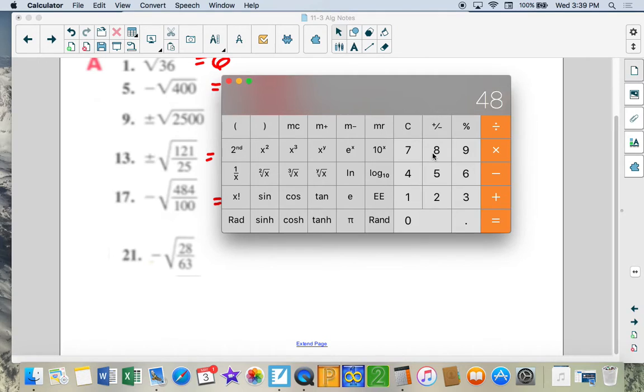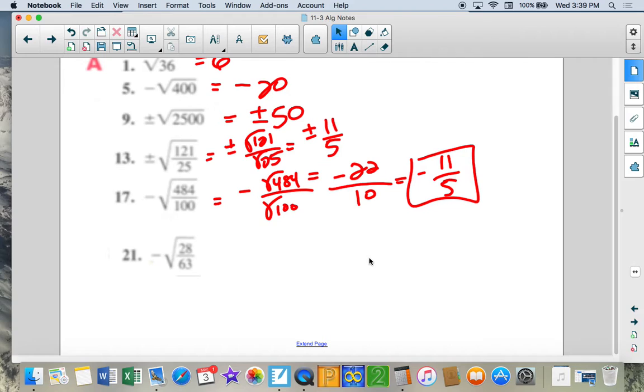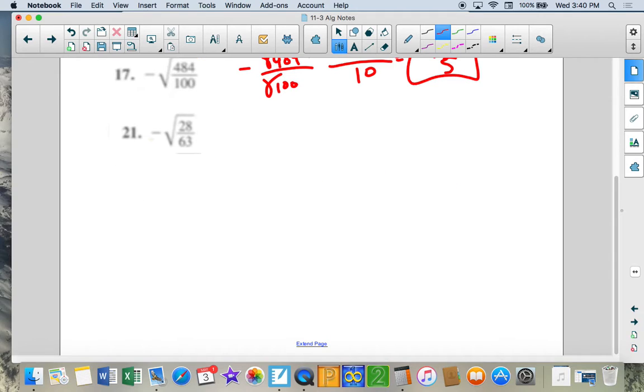Let's say we take 484 and divide it by 100. We get 4.84. And then we hit the square button, we get 2.2, which is 11 over 5. So we could simplify this, but I noticed that both were perfect squares, and so I kept it in that native form.